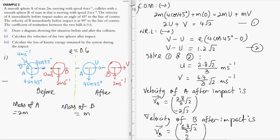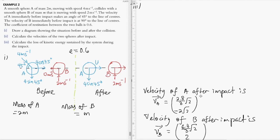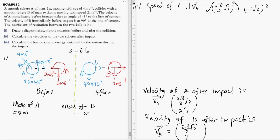Now for question three, we need to calculate the loss in kinetic energy sustained by the system during impact. First let's calculate the speed of A after impact. The speed of A equals the square root of (2.8/(3√2))² + (2√2)², applying Pythagoras' theorem to the two velocity components.